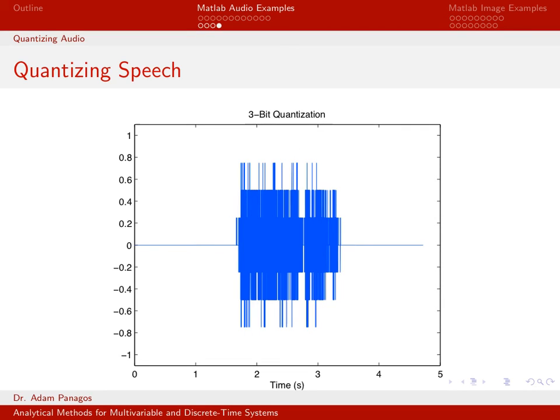And then finally, just for the heck of it, let's do 3 bits. Now it's abundantly obvious where the levels are—2 to the 3 is 8. You can see there's a level here, there's a level here, there's a level here, and if you listen to this, this audio signal would sound quite bad.